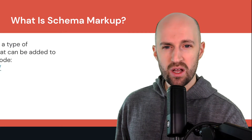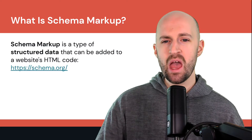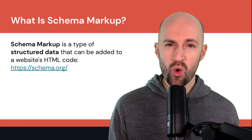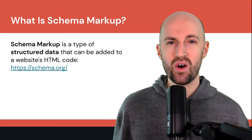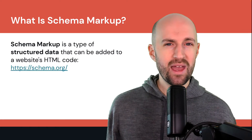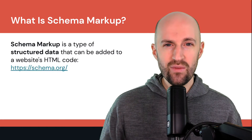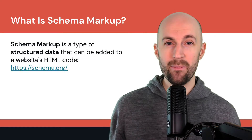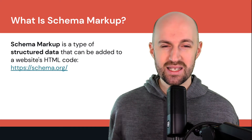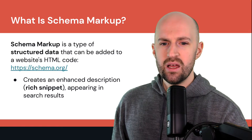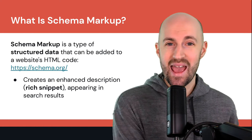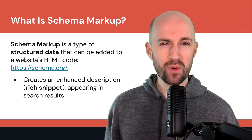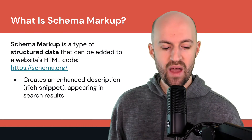What is schema markup? Basically, it's a type of structured data that can be added to a website's HTML code. You can go to schema.org and check out all the entities they have on there — maybe a bit overwhelming, and you may only use a handful of them, but it's useful to go on there because there are great examples and tools to help make it easy to implement schema.org on your website. Basically, this helps to create an enhanced description, also known as a rich snippet, appearing in the search results.